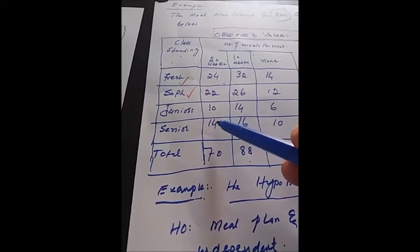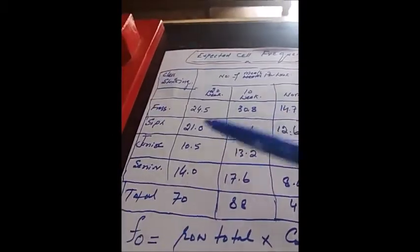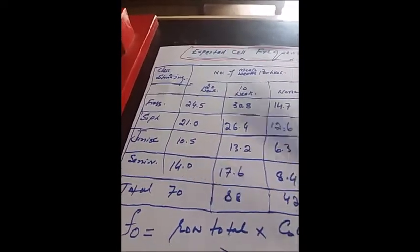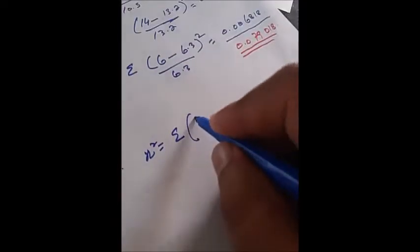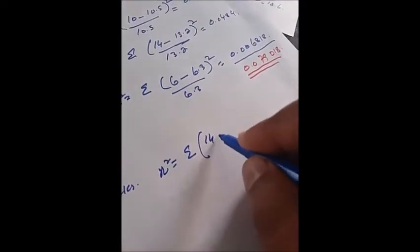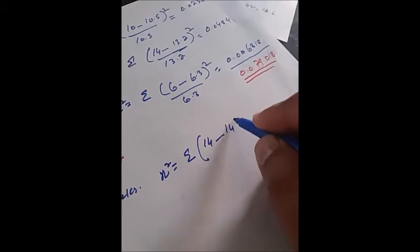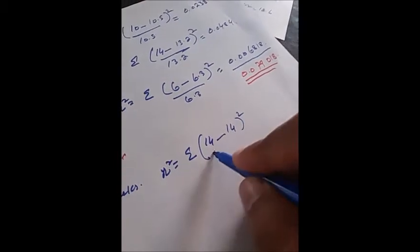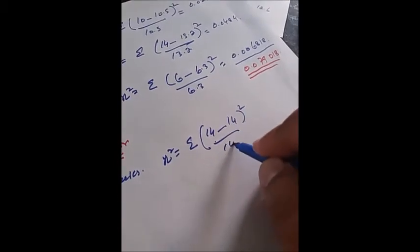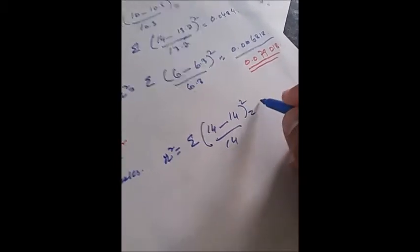For seniors over 20 weeks, the observed value is 14 and the expected value is also 14. So 14 minus 14, whole square, divided by 14, is equal to 0.